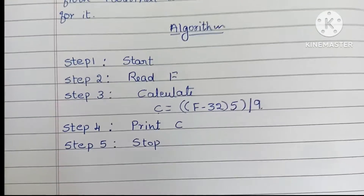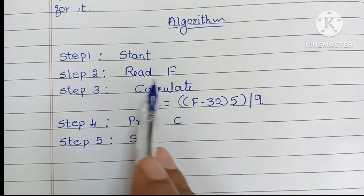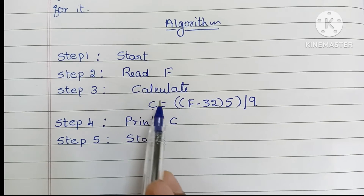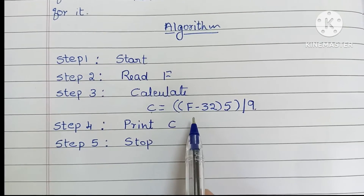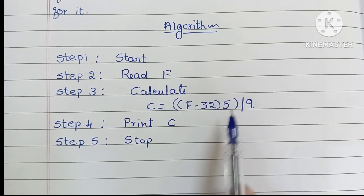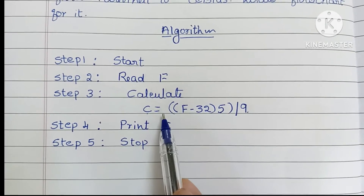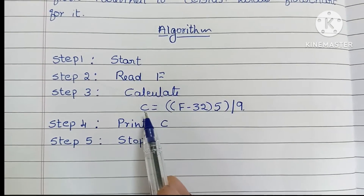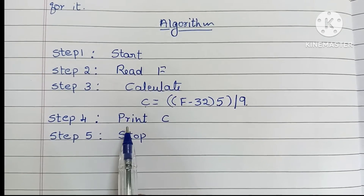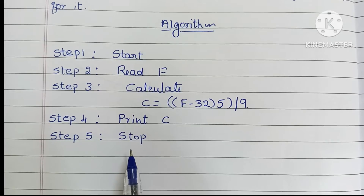To summarize the algorithm: Step 1 is the start statement. Step 2, read the Fahrenheit value F. Step 3, calculate C = (F - 32) × 5 / 9. Step 4, display the result using Print C. Step 5, stop the algorithm using the stop statement.